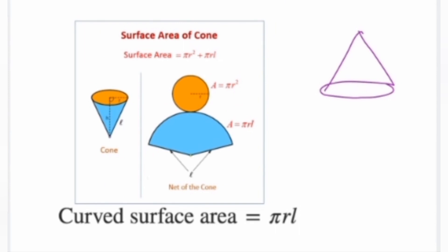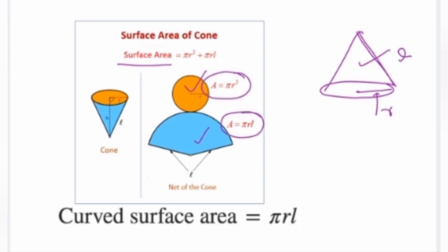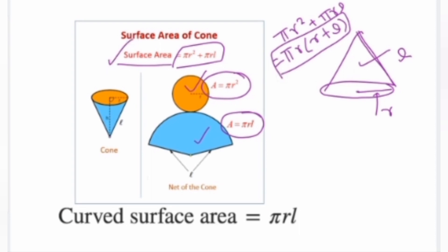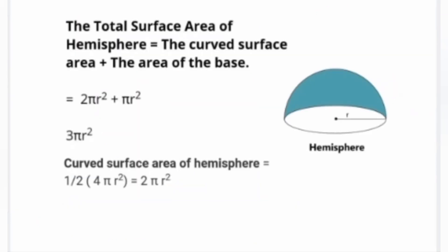Next, the surface area of a cone. The total surface area formula is πr² + πrl, where l is the slant height and r is the radius. If we open the cone, we see the circular base. The curved surface area of the cone is πrl.